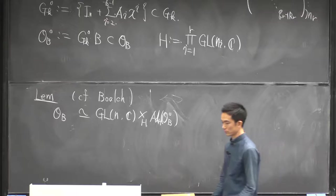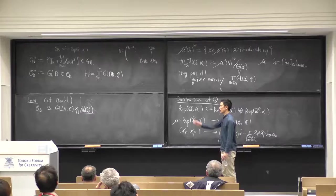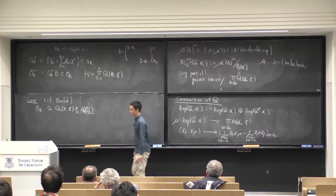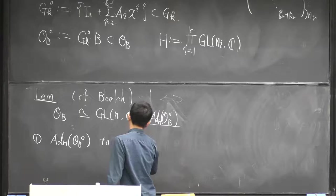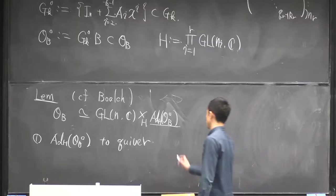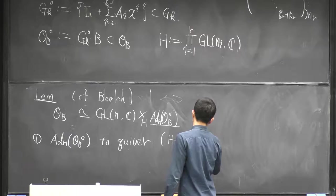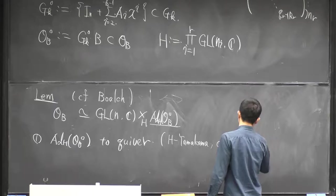We also define O_B naught as the quotient orbit of B by the action of G naught. Also, H is a diagonal matrix, and N_i is coming from the block decomposition of Q_1. By these notations, we can decompose the full orbit of the quaternity normal form as a product of G and C and a smaller orbit O naught.